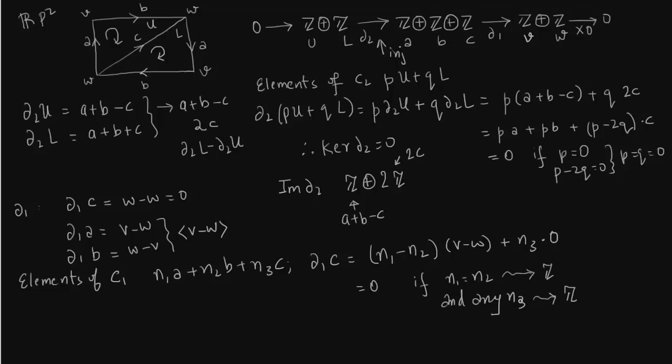You take any value of N1. N1 would generate that, or N2 would generate that. So kernel of delta 1 is Z plus Z. One of them is generated by both A and B, that is A plus B. The second one is generated by C. A plus B. The boundary of B is always opposite of A. So A plus B will give N1 minus N2.